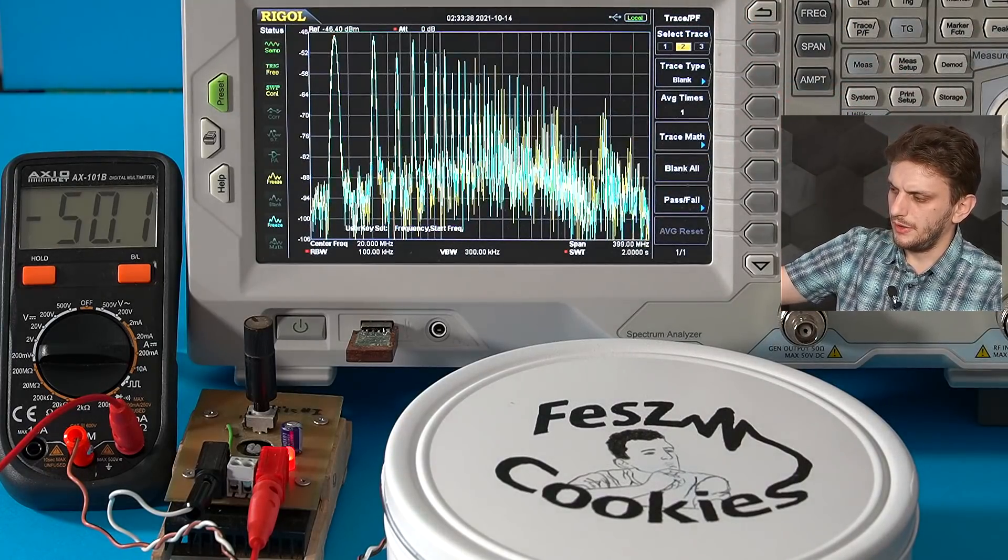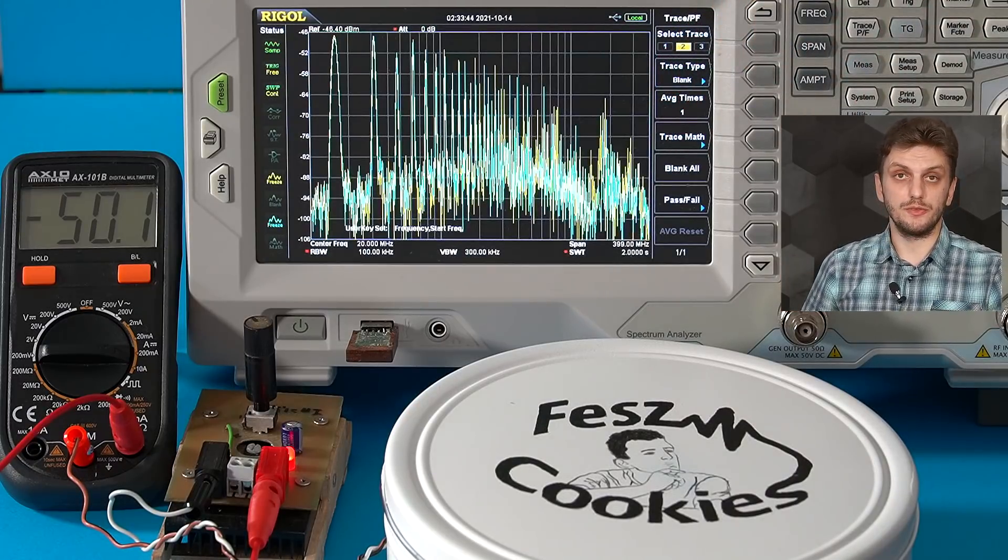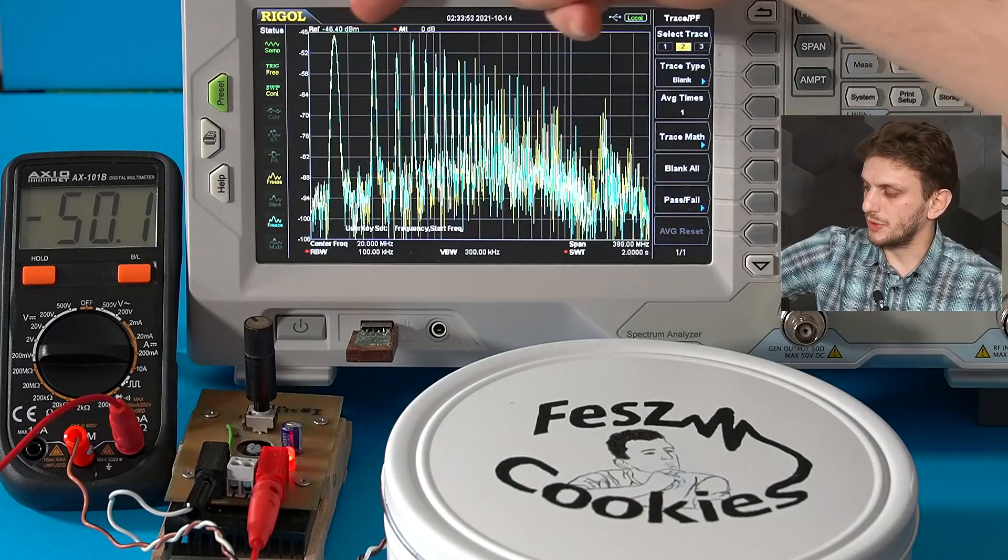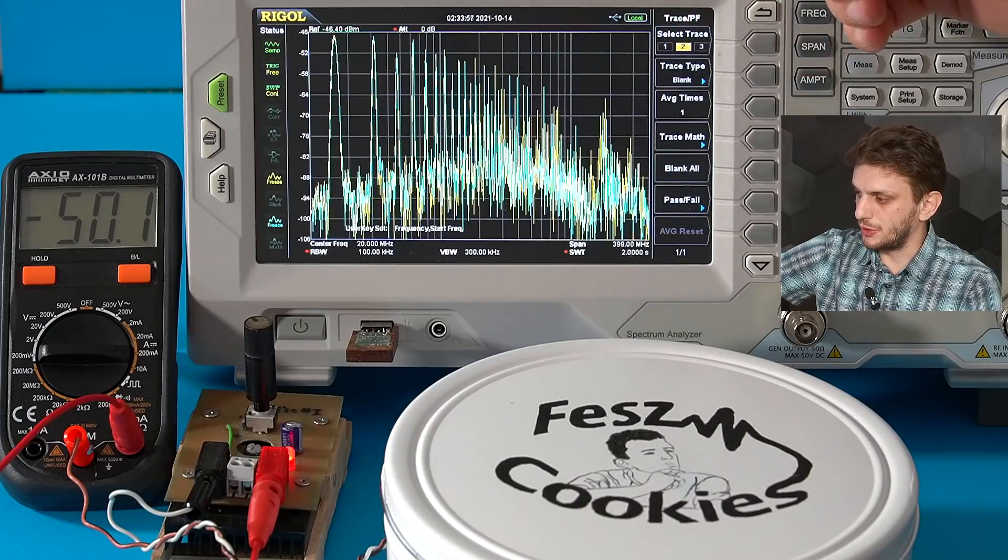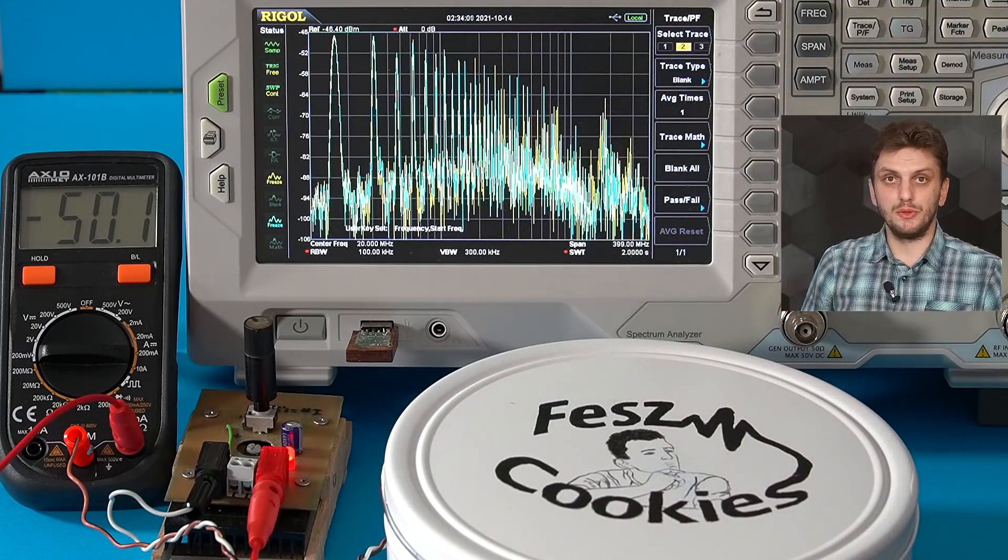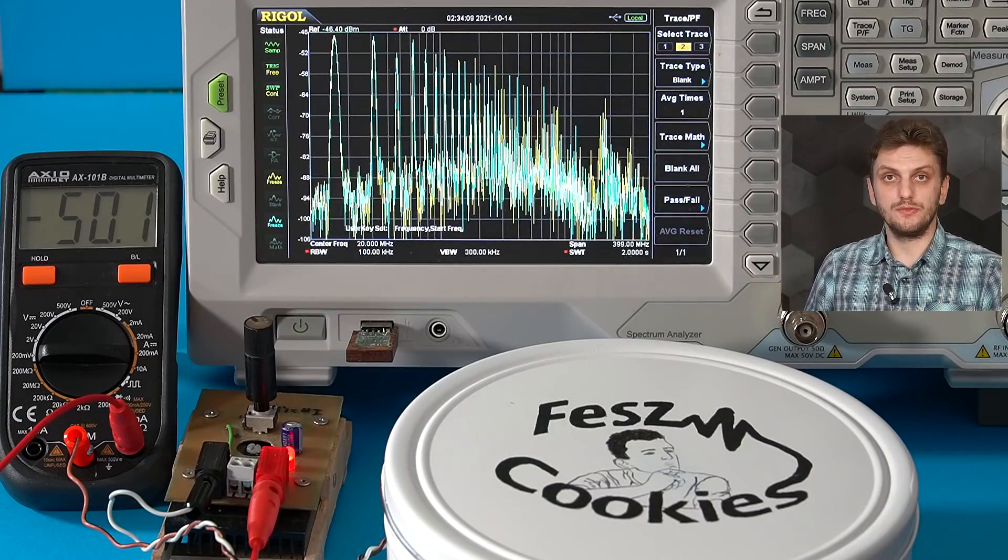Now on the other hand, if we compare our trace to the measurement in which we had all of the loops large, we basically see the same thing. So we can see all around quite large amount of emissions all throughout the spectrum. And our new measurement, so with the input loop kept small, is almost the same as if we would have left all of the loops large.